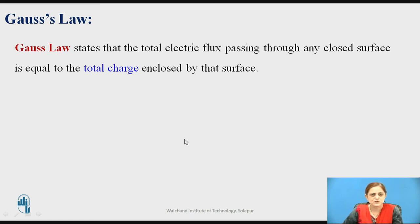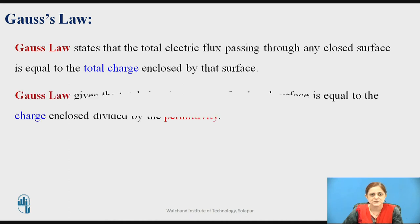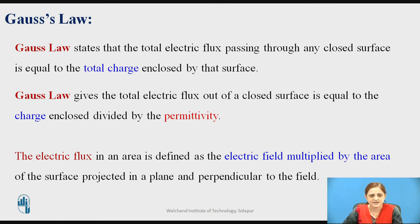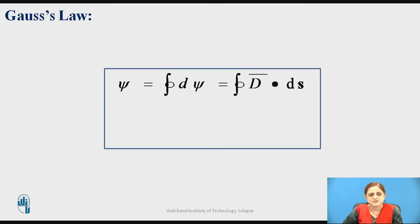Recall Gauss's law: it states that the total electric flux passing through any closed surface equals the total charge enclosed by that surface, or equivalently, the electric flux out of a closed surface equals the enclosed charge divided by permittivity epsilon. Mathematically: psi = ∮ D-bar · ds-bar = epsilon_0 ∮ E-bar · ds-bar.